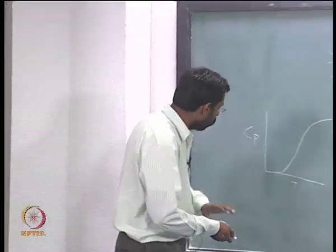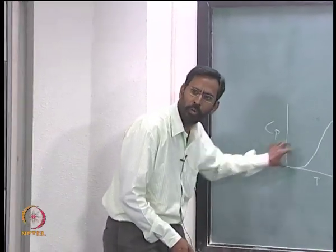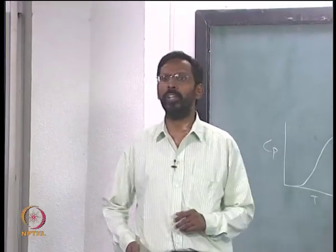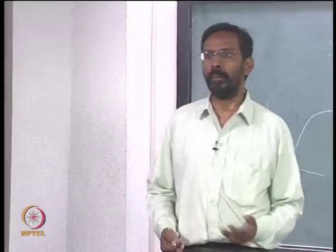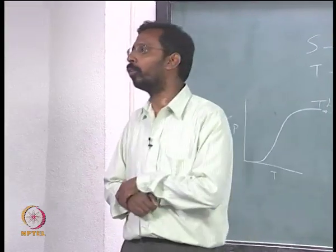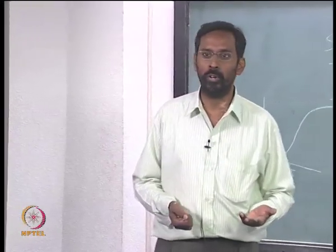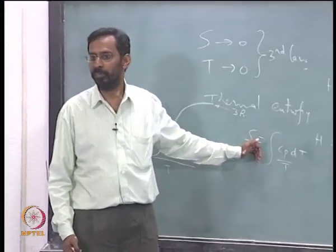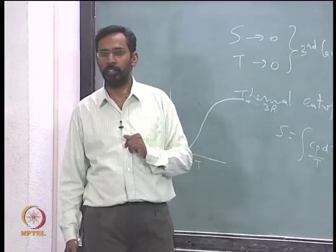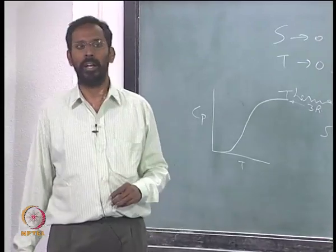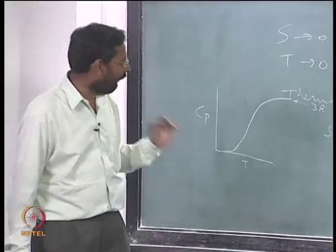One can derive that and show. And as you can see, c p actually goes to 0 at absolute 0, because there are no vibrations at absolute 0. Heat capacity comes because of the vibrations. And because the atomic vibrations vanish as you go to 0, the heat capacity goes to 0. And that is why the entropy also actually goes to 0. That is what is third law of thermodynamics. So you can see that the c p is very, very small and then it increases.